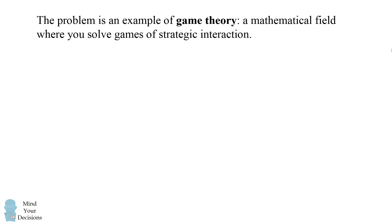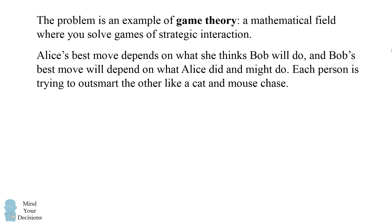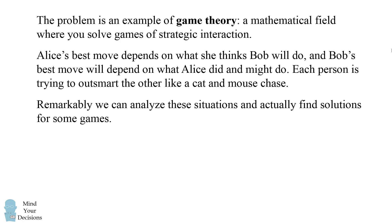Before I get to the solution I want to mention this problem is an example of game theory, a mathematical field where you solve games of strategic interaction. Alice's best move depends on what she thinks Bob will do and Bob's best move will depend on what Alice did and might do. Each person is trying to outsmart the other like a cat and mouse chase. Remarkably we can analyze these situations and actually find solutions for some games.